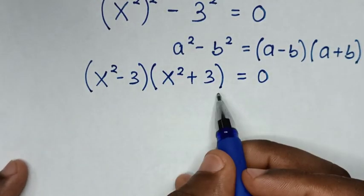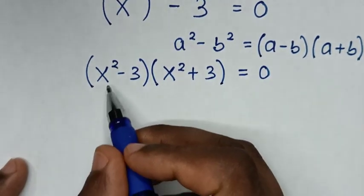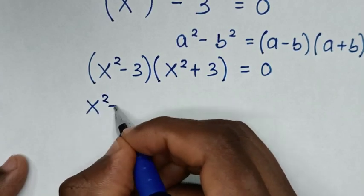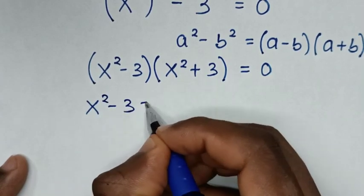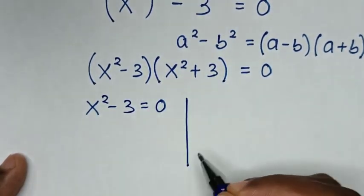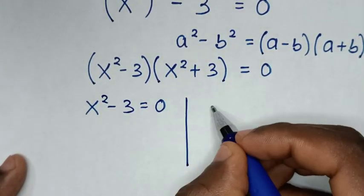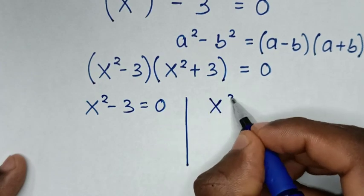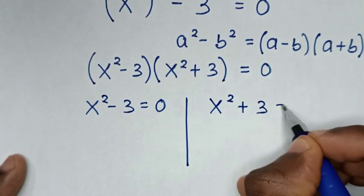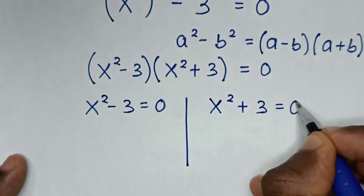From here we have two solutions. The first solution is x squared minus 3 is equal to 0, and the second solution is x squared plus 3 is equal to 0.